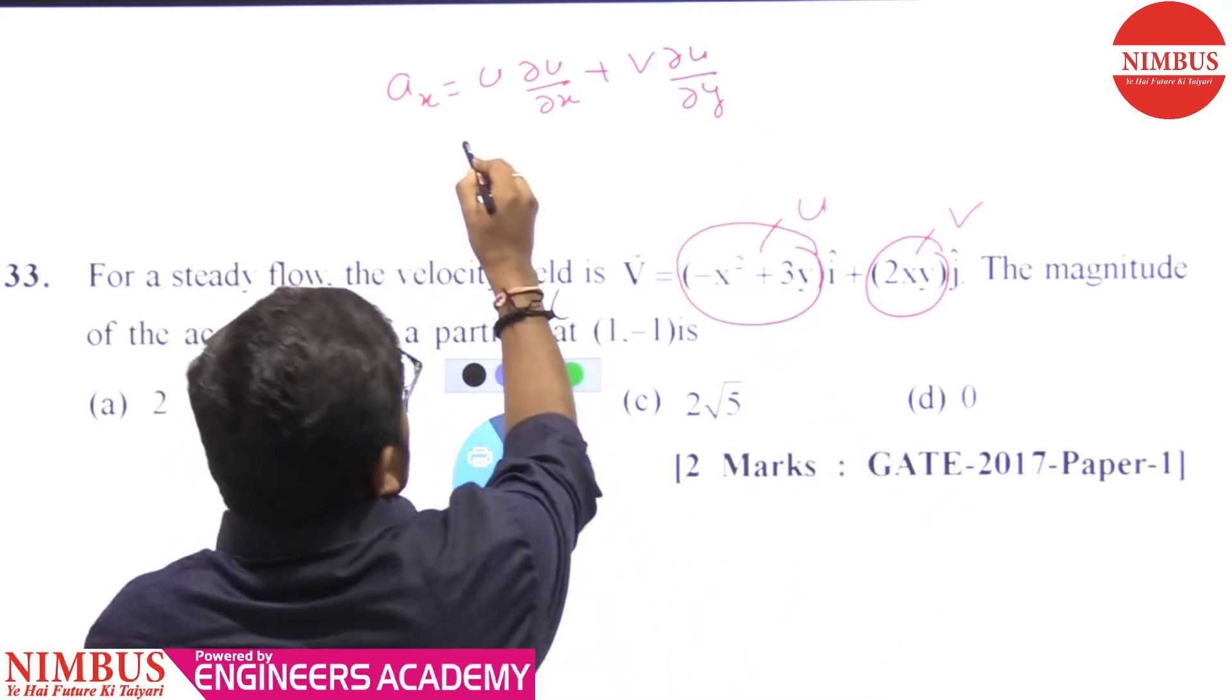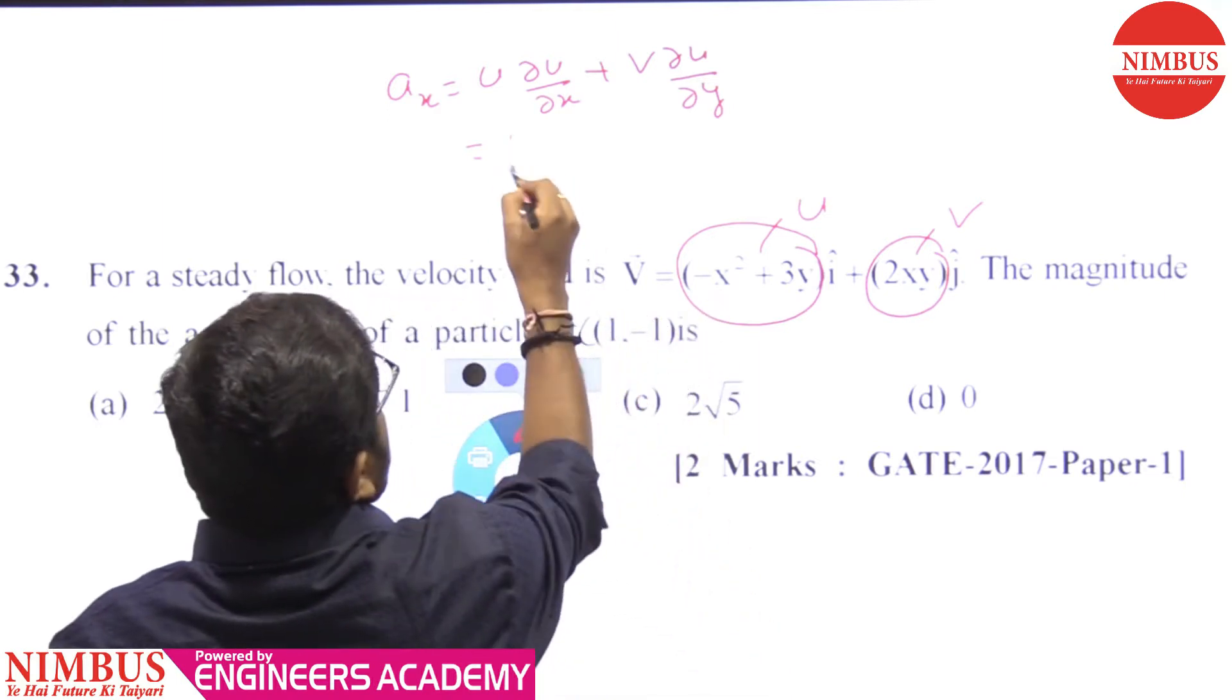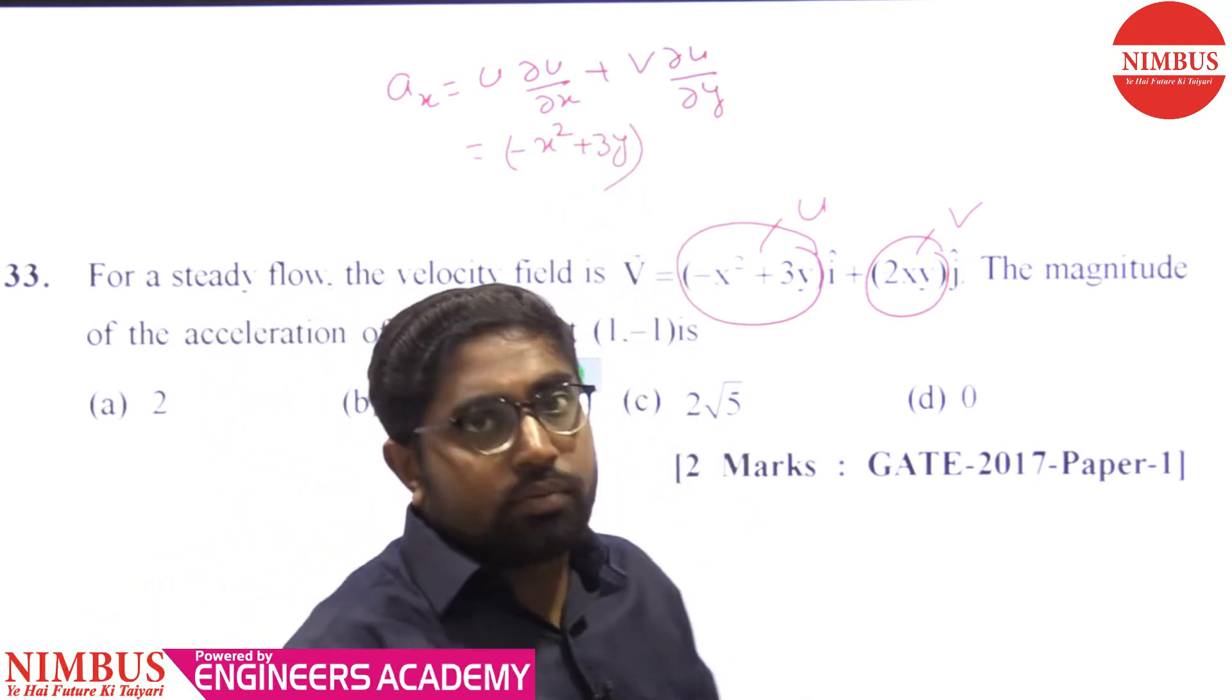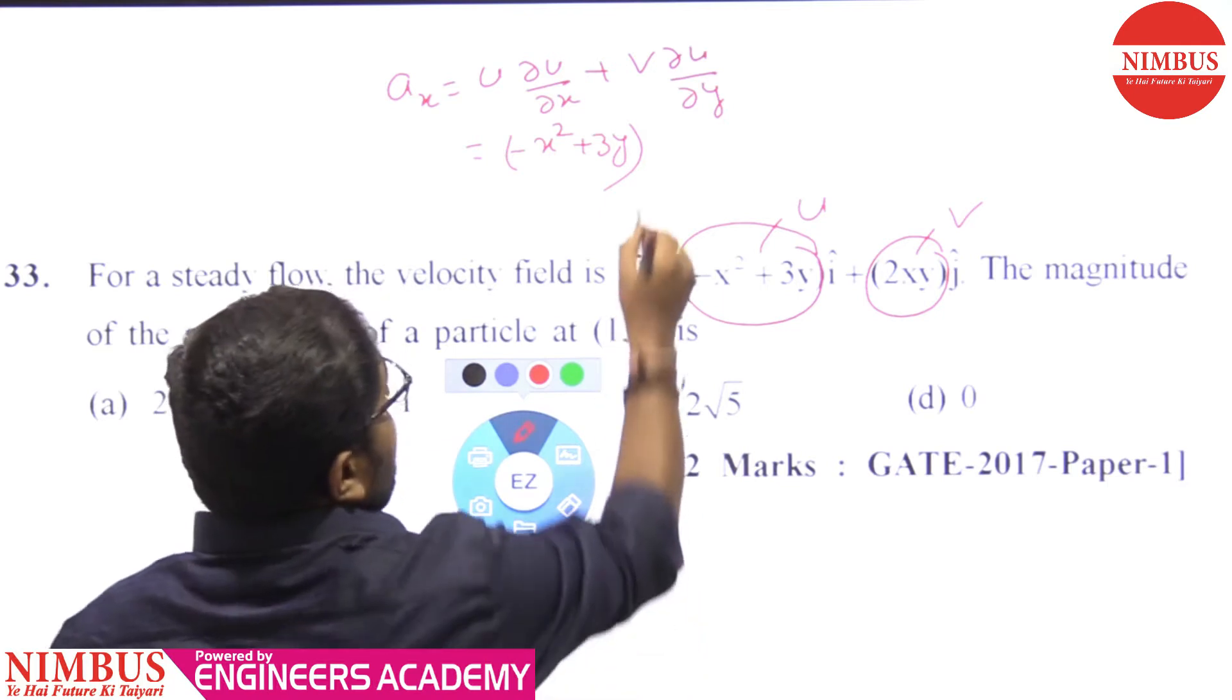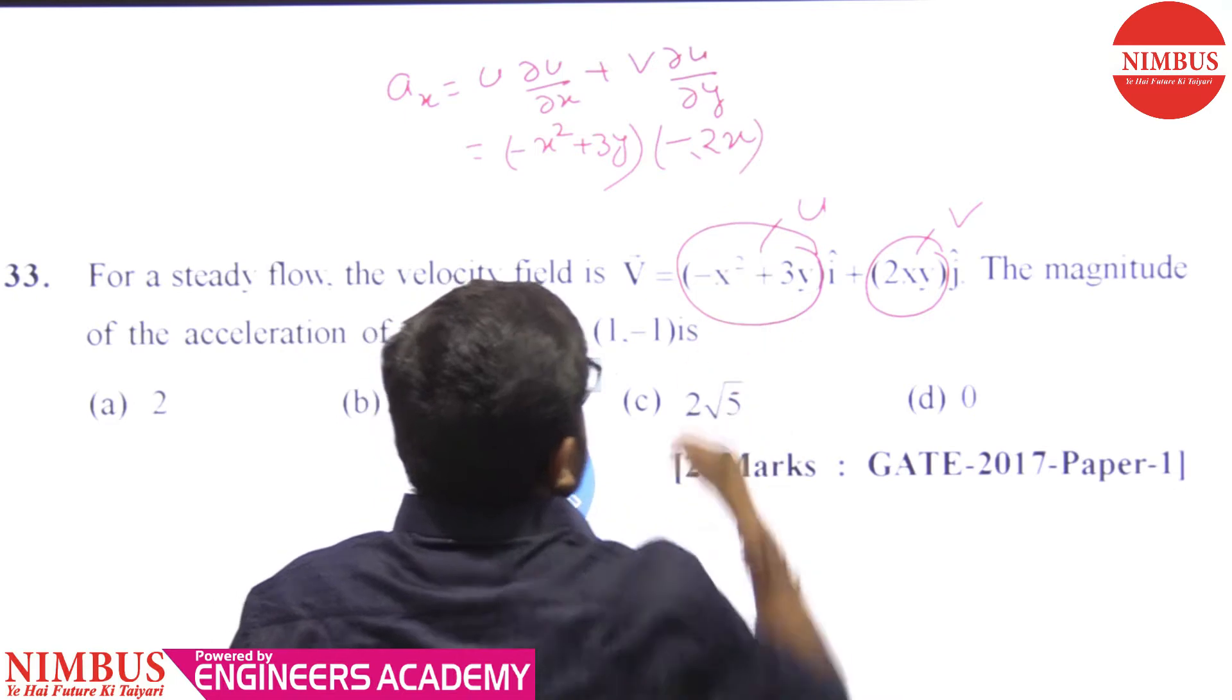If we talk about U, then U is equal to -X² + 3Y. And ∂U/∂X, so ∂U/∂X is -2X. That is -2X.